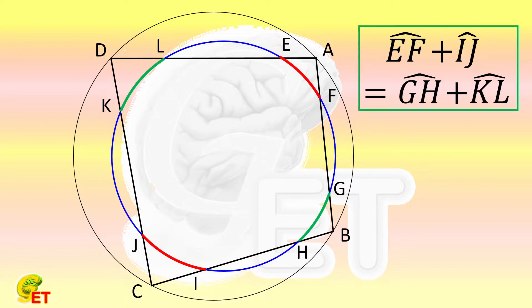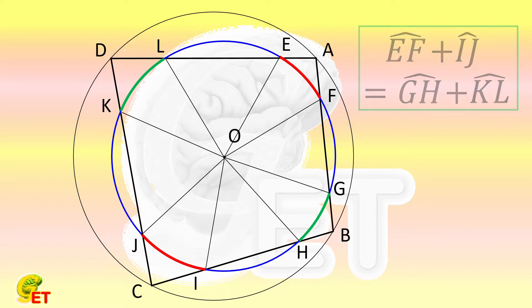We connect the center of the circle to the 8 intersection points, so as to obtain the 4 central angles corresponding to the 4 arcs inside the quadrilateral. And the summations of the two pairs of the opposite ones are equal.